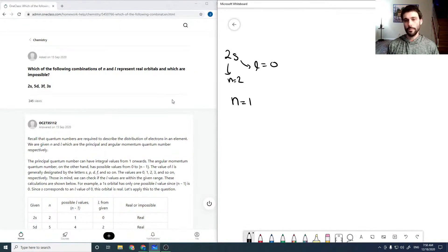So n can be 1 up to infinity. l can take on values from 0 up to n minus 1. And so that's our real restriction here, is that l can't be greater than n minus 1. And that's kind of what we're going to be looking for.